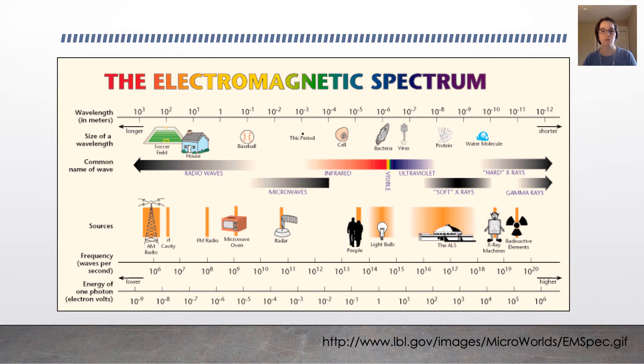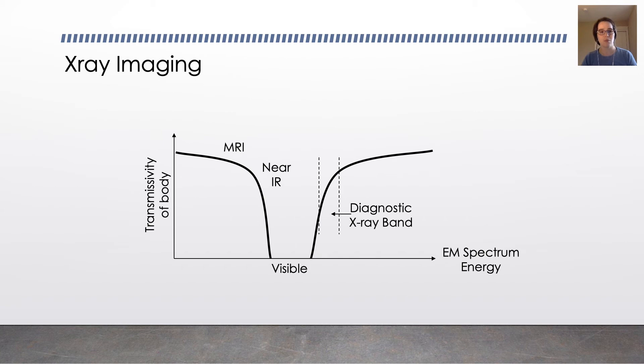In x-ray imaging, we use a particular portion of it up here in the x-ray spectrum where the wavelength is very, very small. And the interesting thing about the body is that the body allows through some wavelengths of the electromagnetic spectrum and it blocks others. In particular, it blocks the visible wavelengths of the electromagnetic spectrum. That's why you're visible.